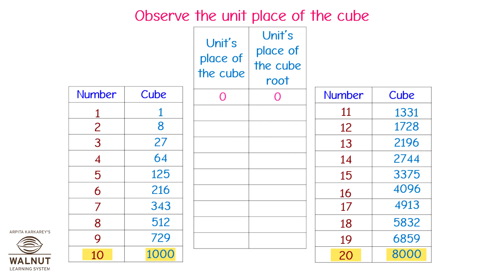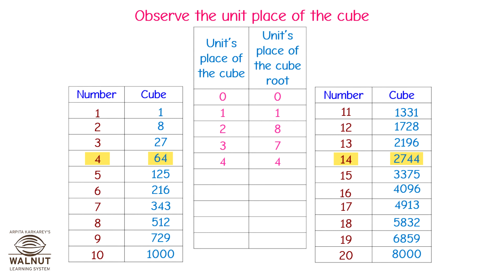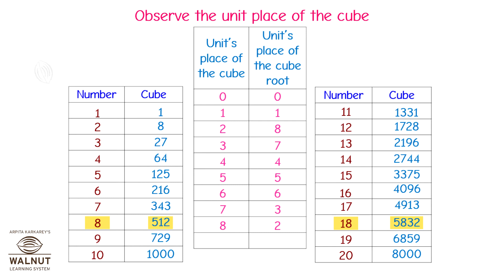Observe the unit place of the cube. If the unit's place of the cube is 0, then the unit's place of its cube root is 0. If it is 1, the cube root's unit digit is 1. If it is 2, the cube root's unit digit is 8. If it is 3, the cube root's unit digit is 7. If it is 4, the cube root's unit digit is 4. If it is 5, the cube root's unit digit is 5. If it is 6, the cube root's unit digit is 6. If it is 7, the cube root's unit digit is 3. If it is 8, the cube root's unit digit is 2. If it is 9, the cube root's unit digit is 9.